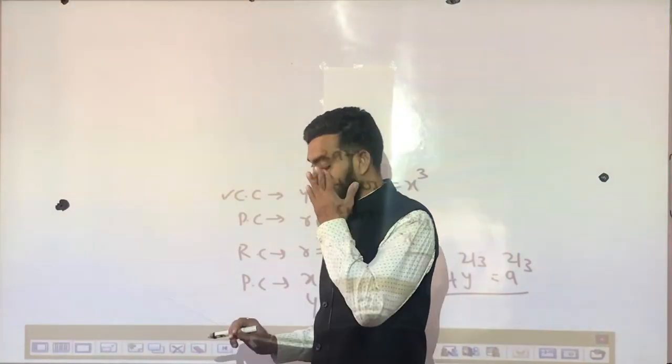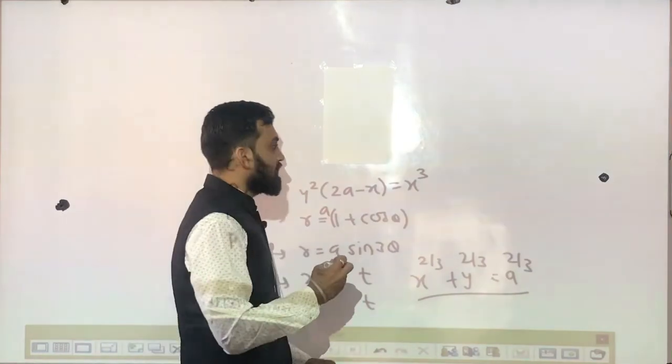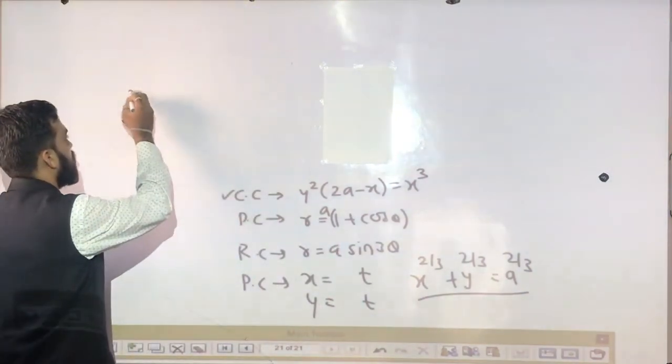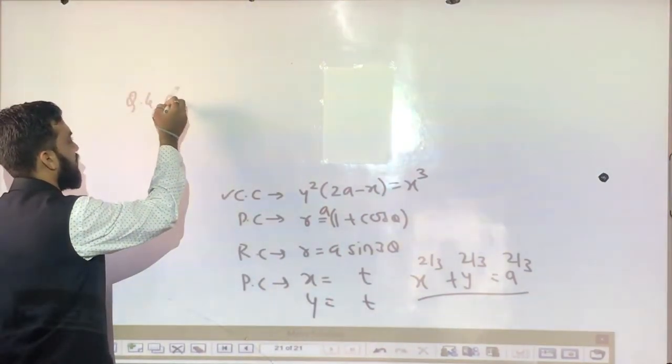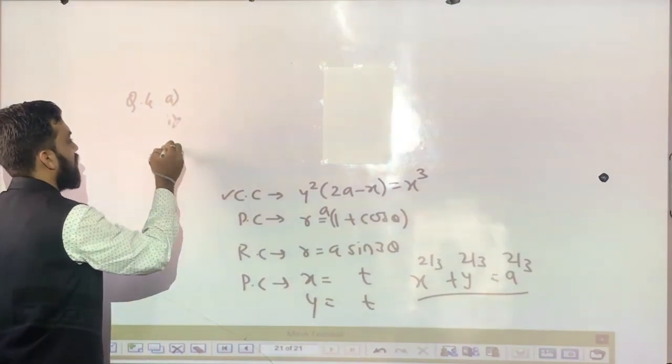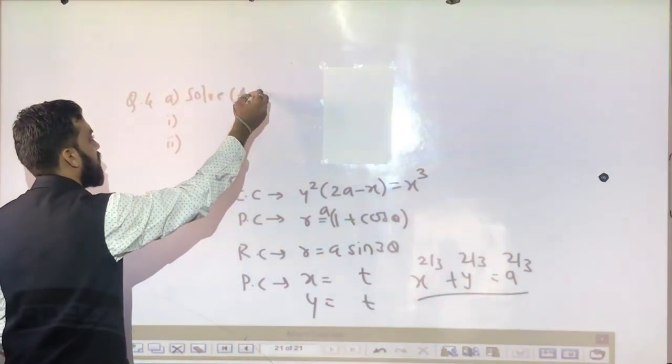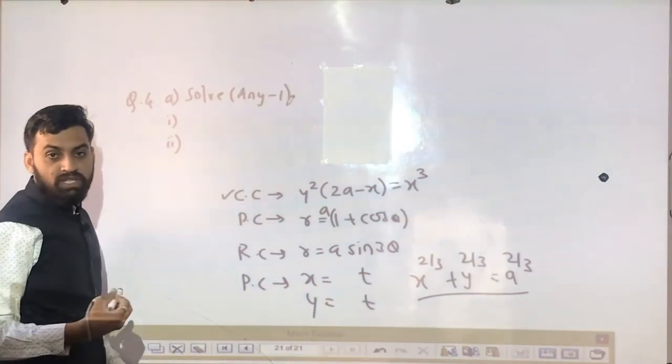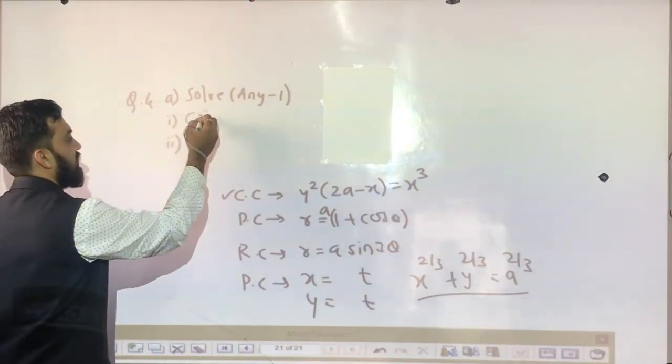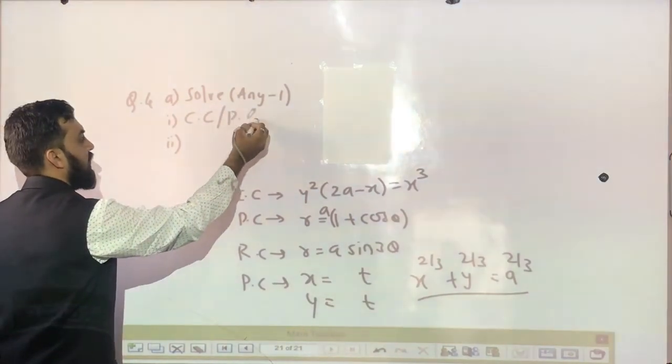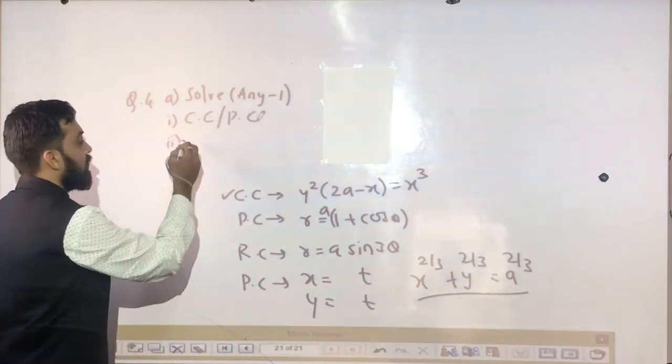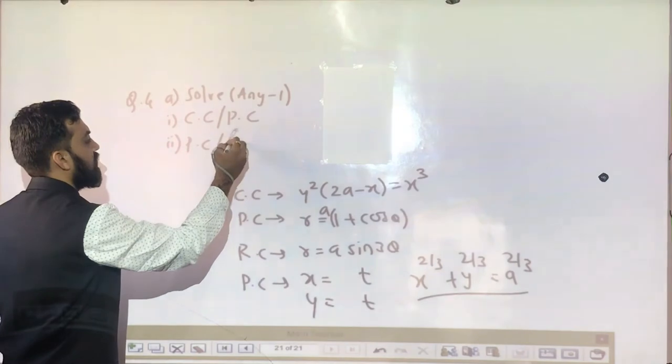And let me tell you, how will you come to the exam? Question number 4, 1 and 2. How will you come to the exam? Cartesian? Parametric? Polar? Okay? How will you take the exam?